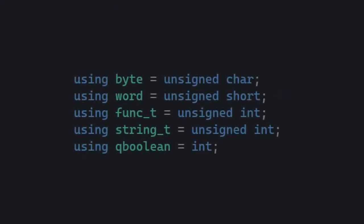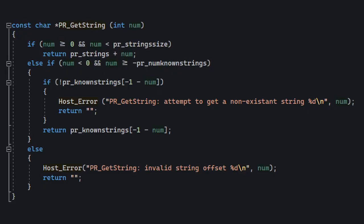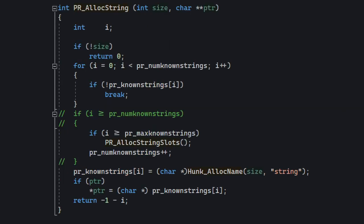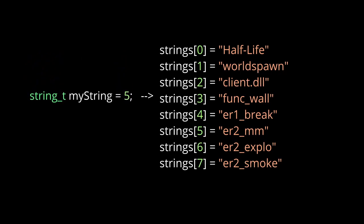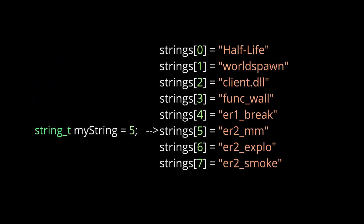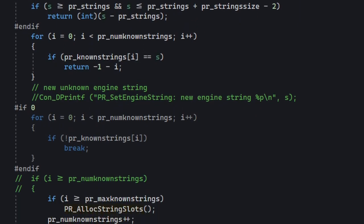Let's move on to string_t. If you look at the definition of string_t, you'll see that it's an unsigned integer. The engine basically has a string allocator, and inside of it there's a huge buffer of strings. So you can think of string_t as an index into that array of strings. That's all the mystery behind it — I could go into the details, but I don't want to overcomplicate things.